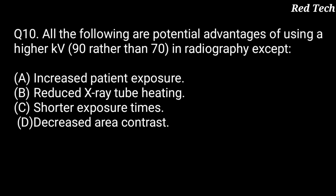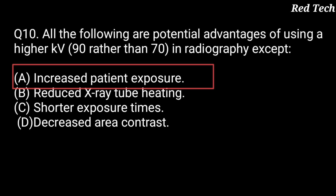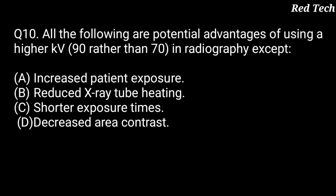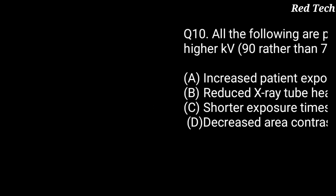Question number 10: all of the following are potential advantages of using a higher kV (90 rather than 70) in radiography, EXCEPT — option A is increase patient exposure, option B is reduced X-ray tube heating, option C is shorter exposure time, option D is decrease area of interest. The right answer is option A, increase patient exposure. Using lower kV does not necessarily increase patient exposure; the other options are true advantages of higher kV. Those were our 10 PYQ questions — I hope all points are clear.